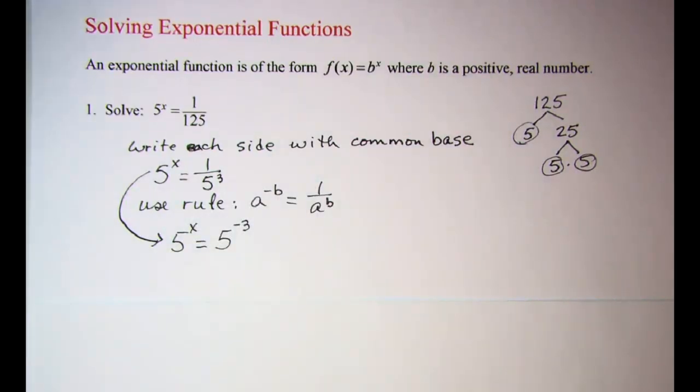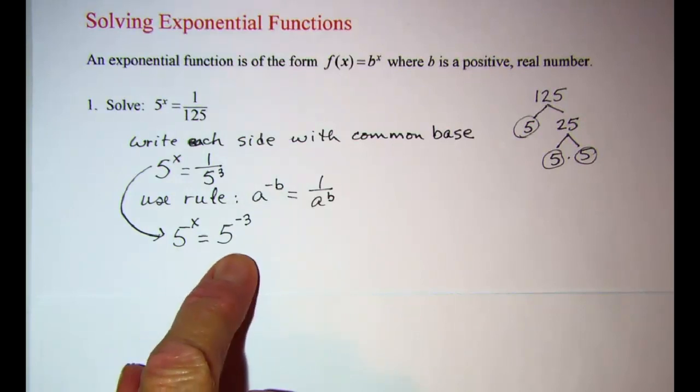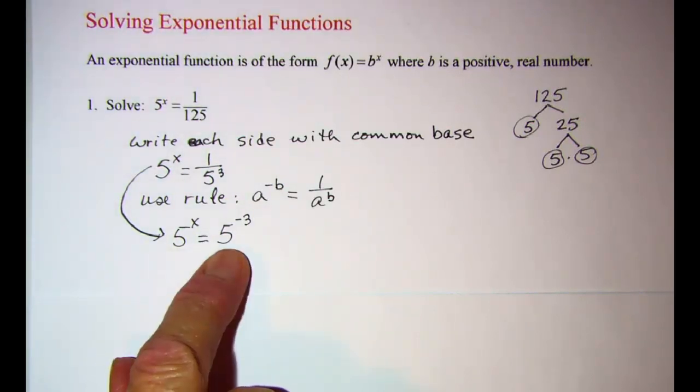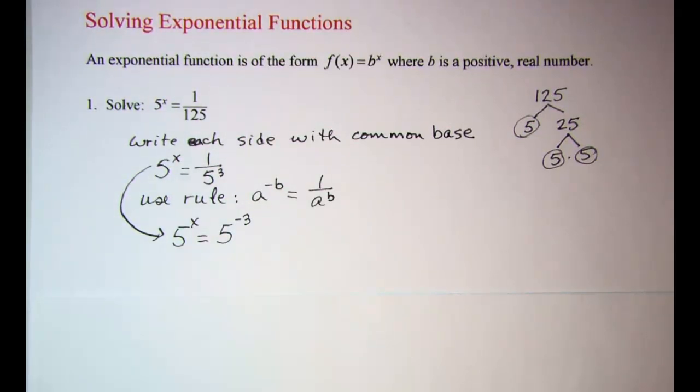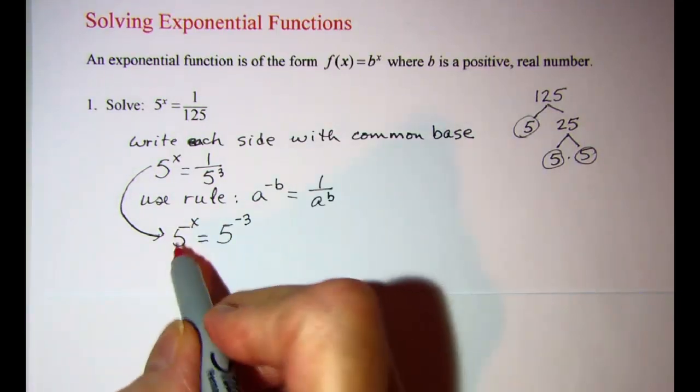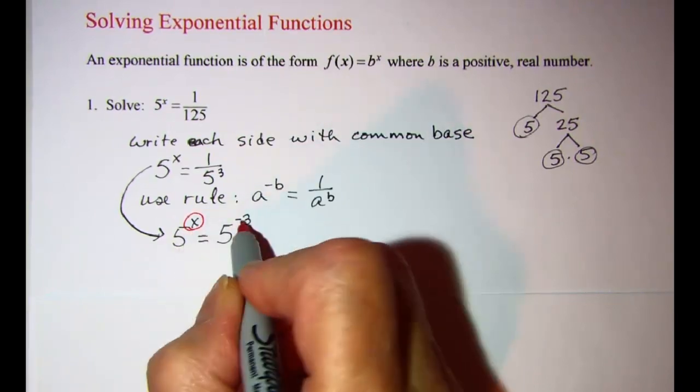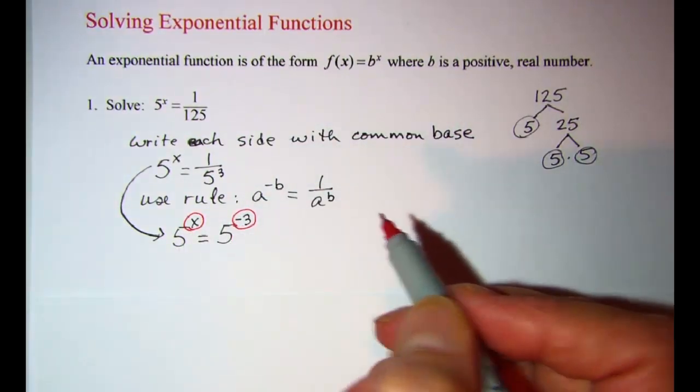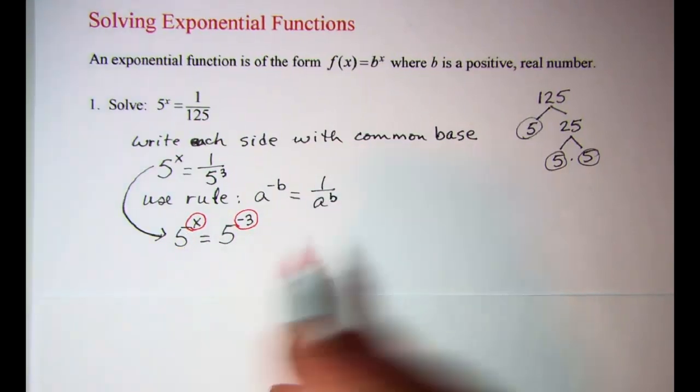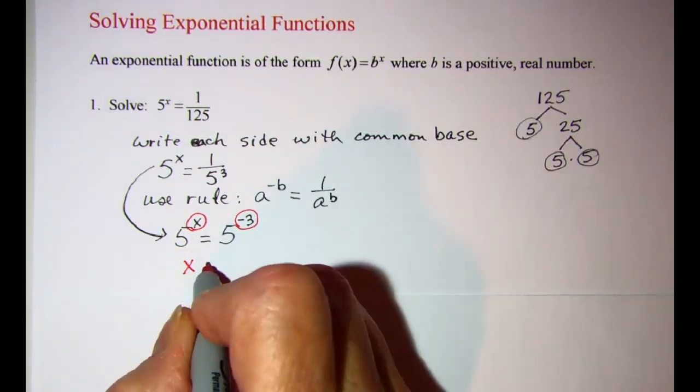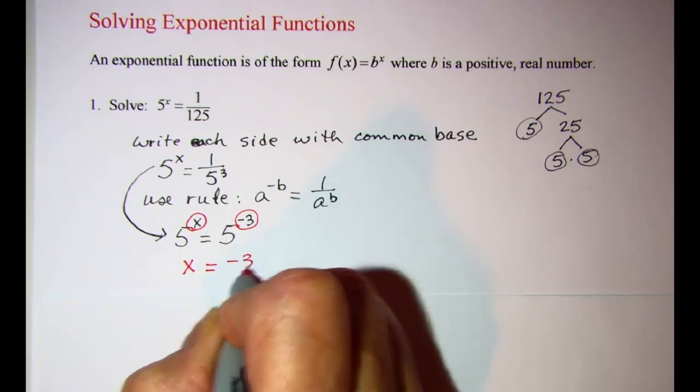Now since both of these are equal and the bases are equal, 5 and 5, then that means the exponents must be equal to keep the two quantities equal. So I have x = -3.